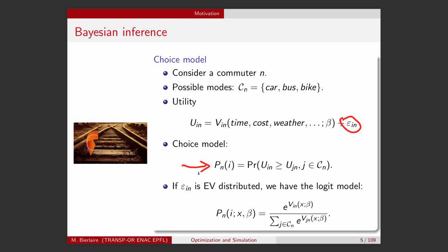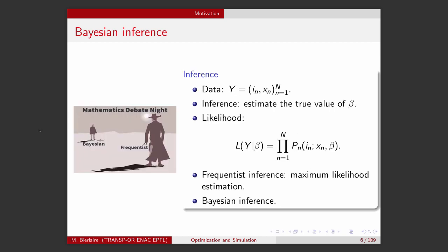And to be concrete, if you assume that epsilon has an extreme value distribution, you can obtain a model which is very well known called the logit model. And this is the formula for the logit model. So what is inference? Well, inference consists in estimating the true value of the beta, that is unknown, using a dataset.